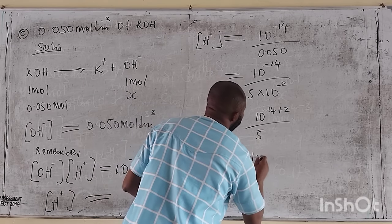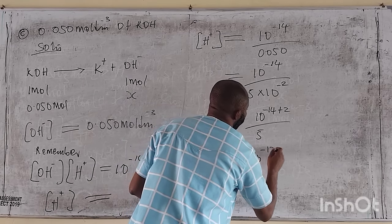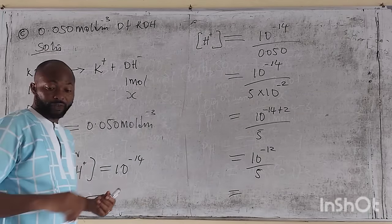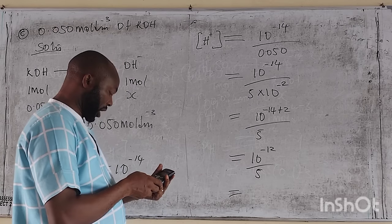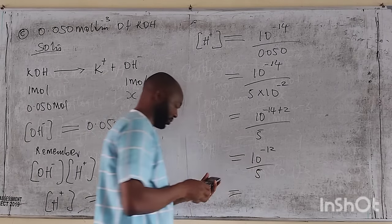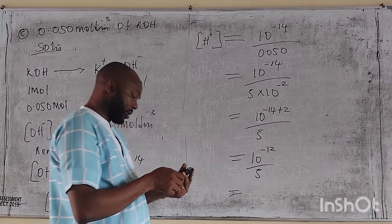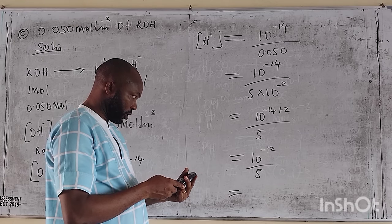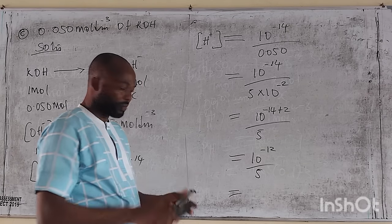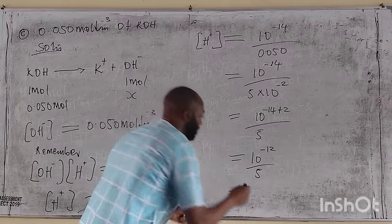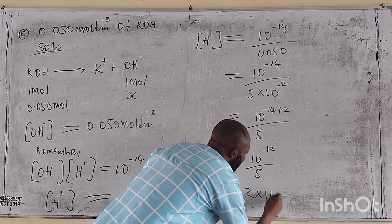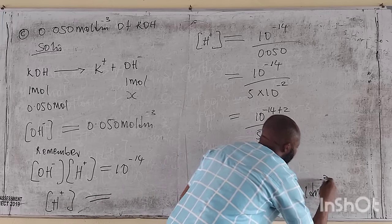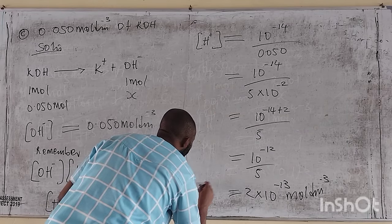This gives us 10 raised to minus 12 over 5, which equals 2 times 10 raised to minus 13 mol per dm³. This becomes the hydrogen ion concentration. Having gotten the hydrogen ion concentration, we proceed to get our pH.